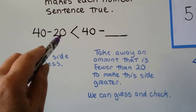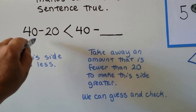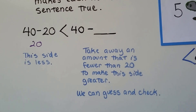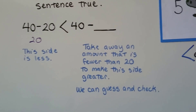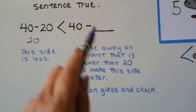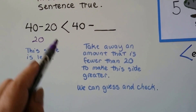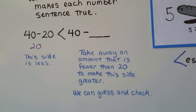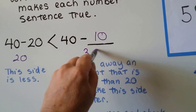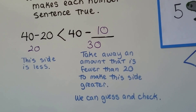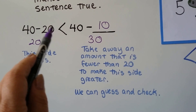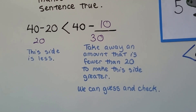What we can do is do the subtraction. 40 minus 20 — four 10s minus two 10s is two 10s, which is 20. We need this side to be larger, greater than 20. So if we take away an amount fewer than 20, it'll make this side greater. If we don't take as many away, this side will stay larger. We just need an amount fewer than 20. What if we took away 10? Four 10s minus one 10 is three 10s — that's 30. Is 20 less than 30? Yes, that works. In fact, we could have used any number 19 or smaller.